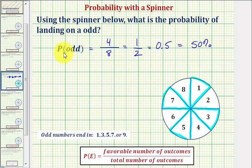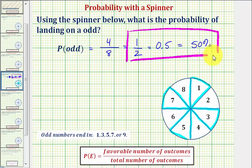So if the probability of spinning an odd is one-half, this means theoretically we expect to roll an odd number one time out of every two spins. Having a probability of fifty percent means we expect to land on an odd fifty percent of the time, or fifty times out of one-hundred spins. I hope you found this helpful.